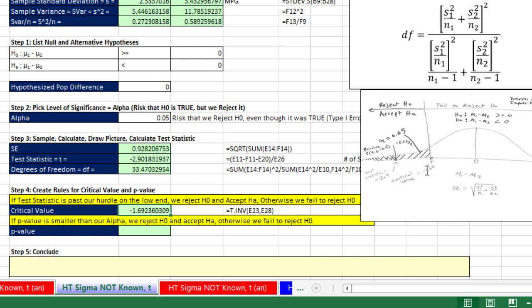There's our hurdle. Anything past this line, minus 1.69. Anything past, we reject the null and accept the alternative. Anything that way, we'd fail to reject. Well, we already know we're going to reject it. It is way past.